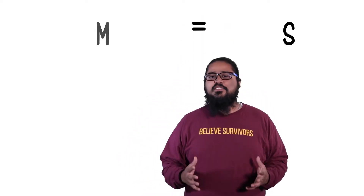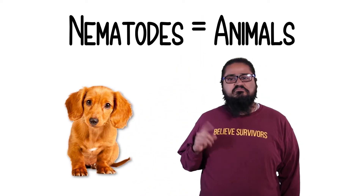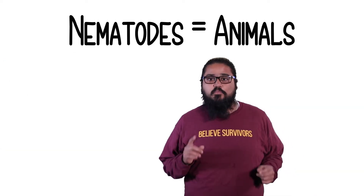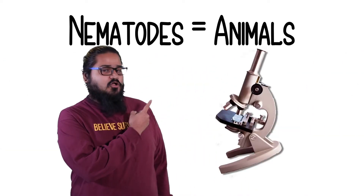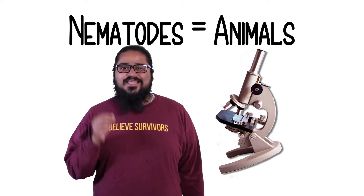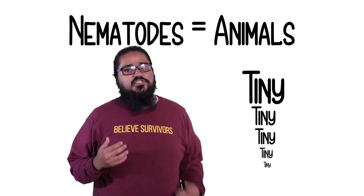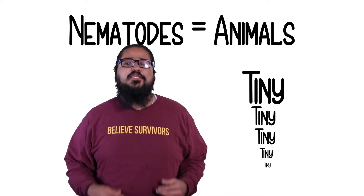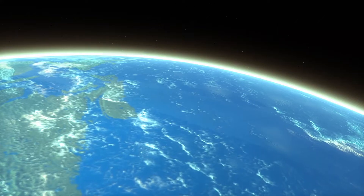So nematodes are animals — yes, like a dog or a cat. But there's one difference: you need a microscope to study them. They're tiny, tiny animals. They're microscopic. Unless you have a microscope, you can't really see them. So they are animals, but they're really tiny animals.